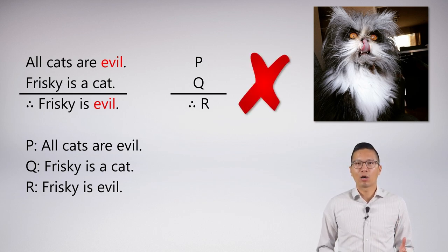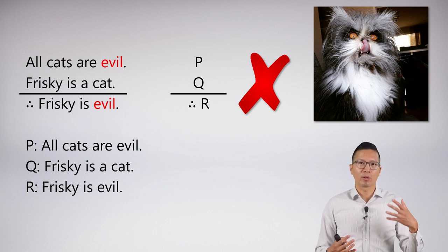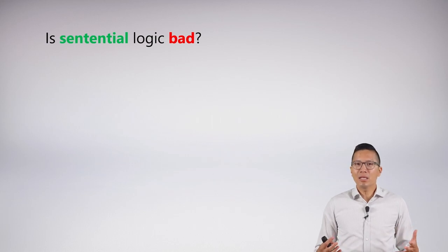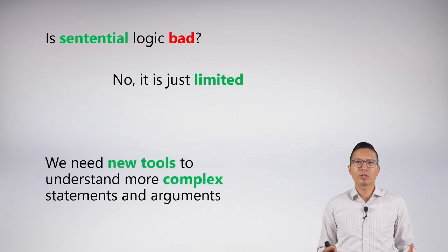But you can see the problem. According to what we know about logic, this argument is actually not valid. The truth of the premises does not imply the truth of the conclusion. So we have this mystery. Does this mean that sentential logic is somehow flawed or somehow bad? That's actually not the conclusion we want to draw. It's just that it's limited.